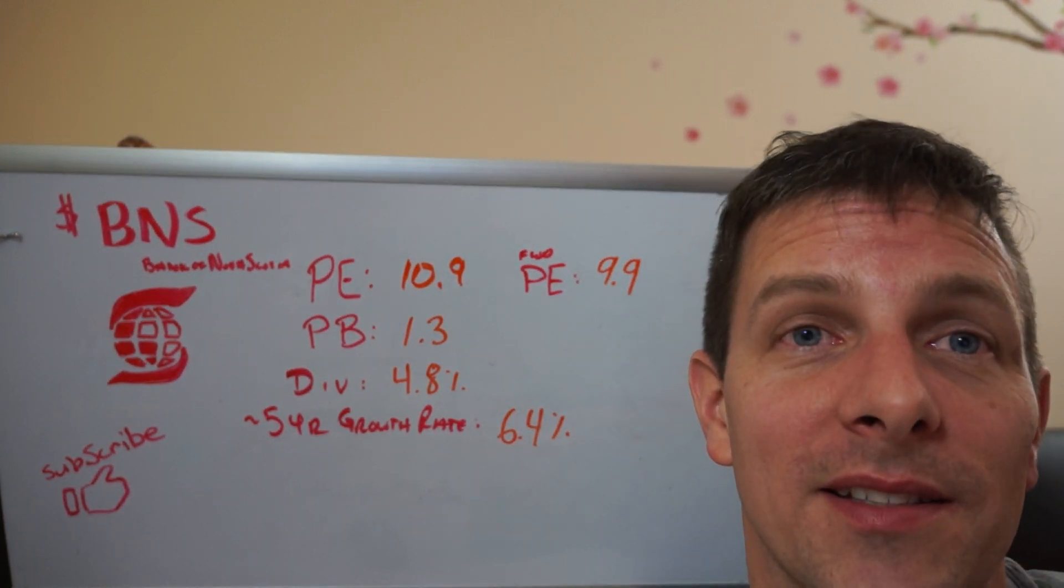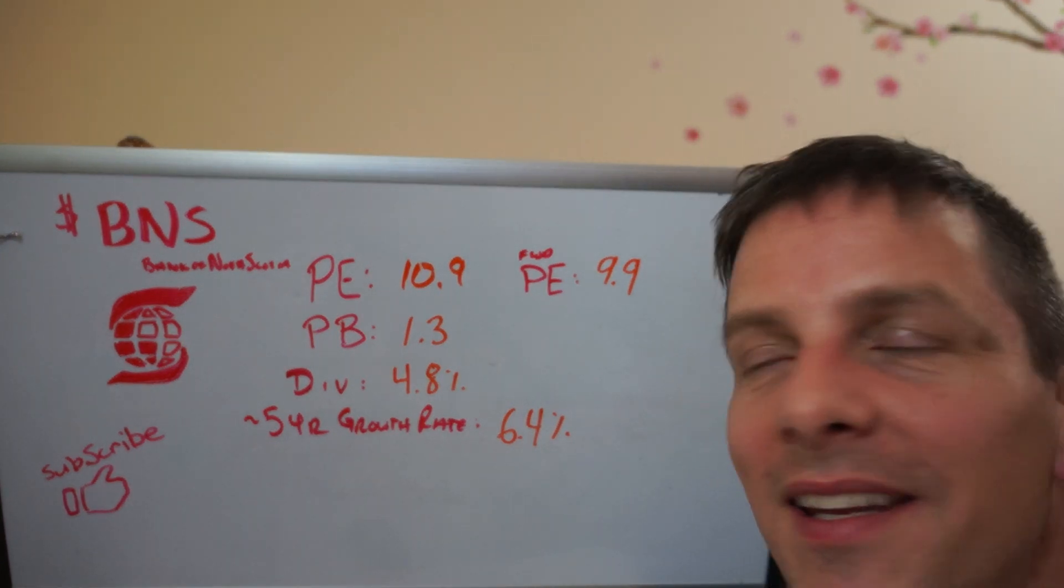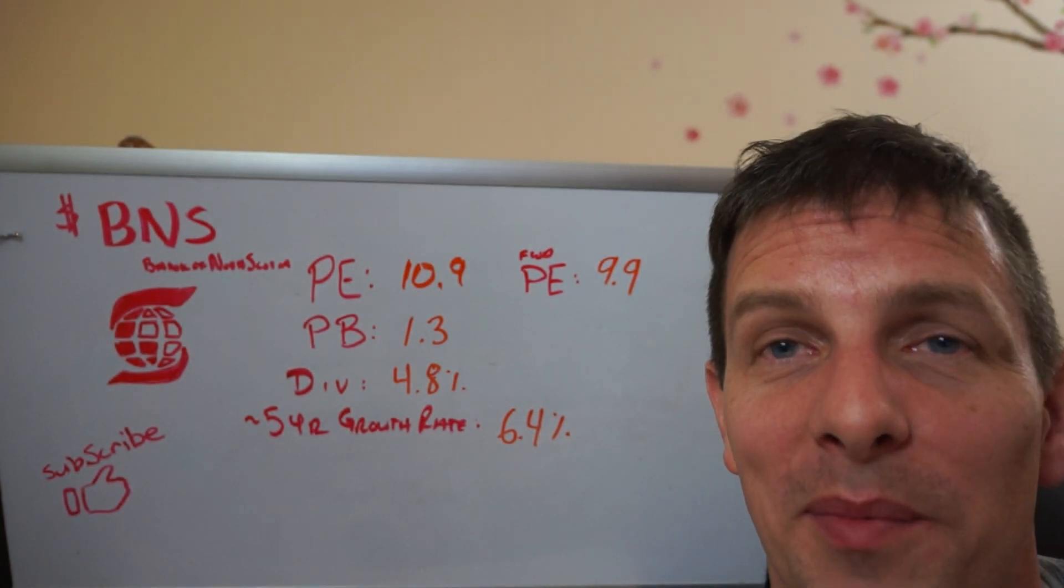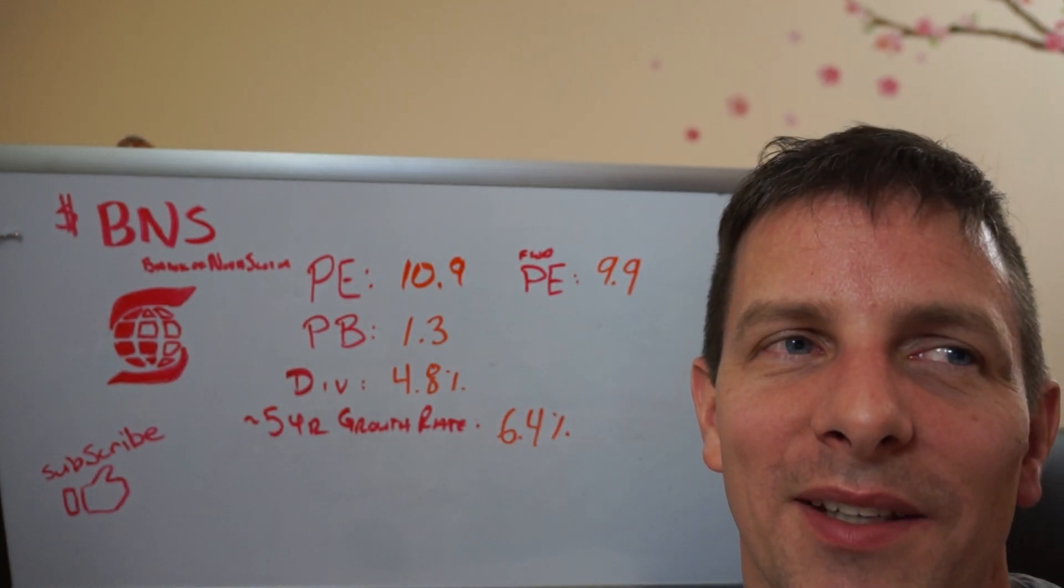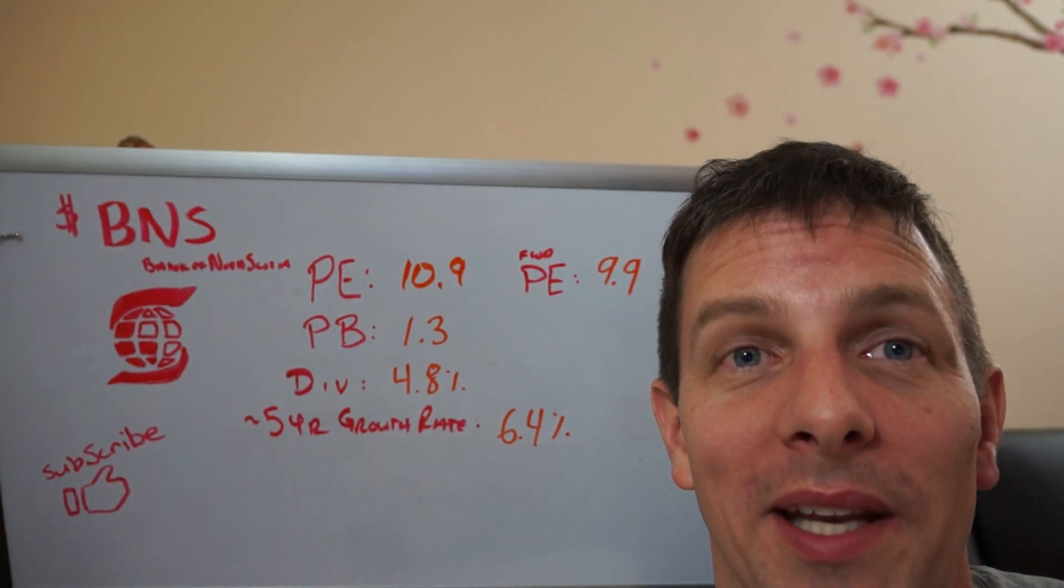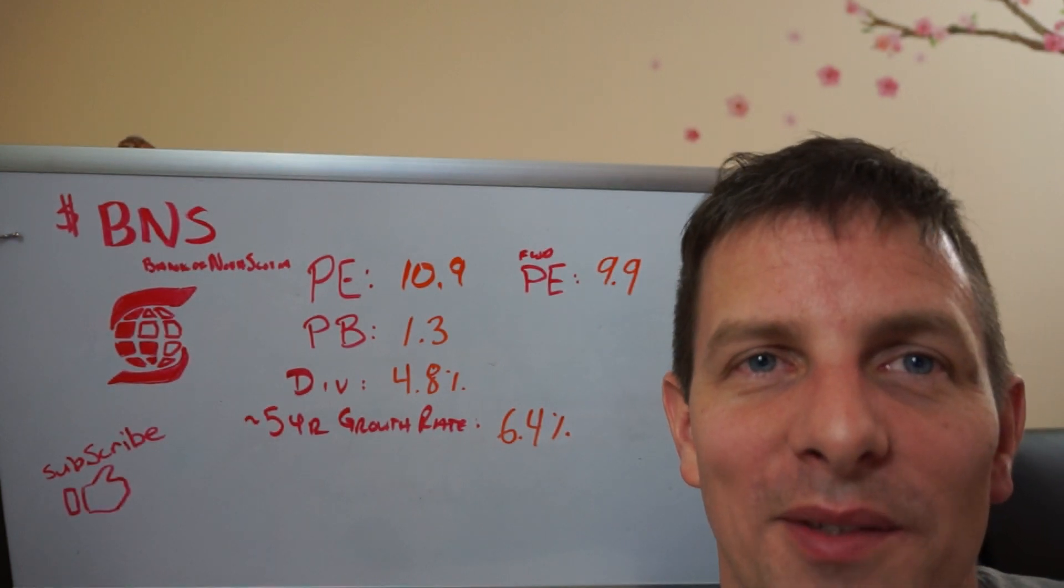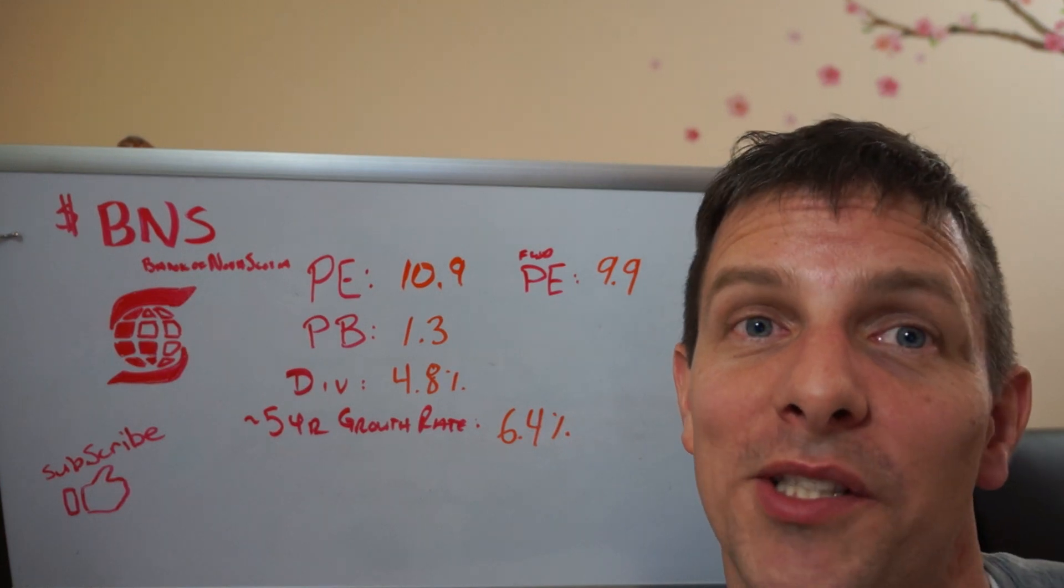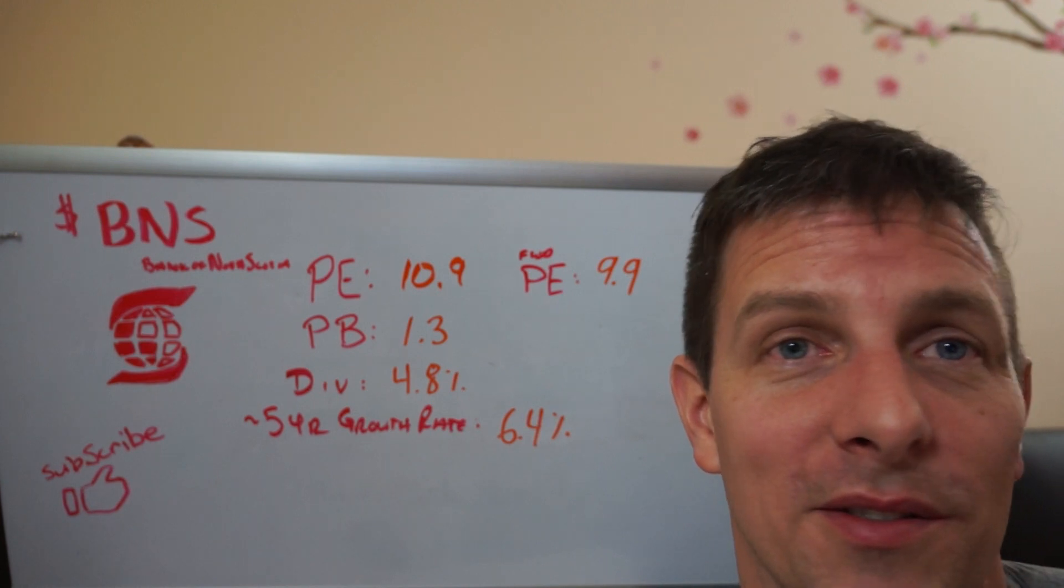Now the price is currently at $73.17 Canadian. That gives it a PE ratio of 10.9, which is very cheap, and a forward PE ratio estimated at 9.9. The average stock in the market is typically somewhere between 18 and 22 for a price to earnings ratio. Maybe this is an old bank and so people aren't as excited about it, but it is much cheaper than that. And it's got a price to book ratio of 1.3, which is also very cheap.